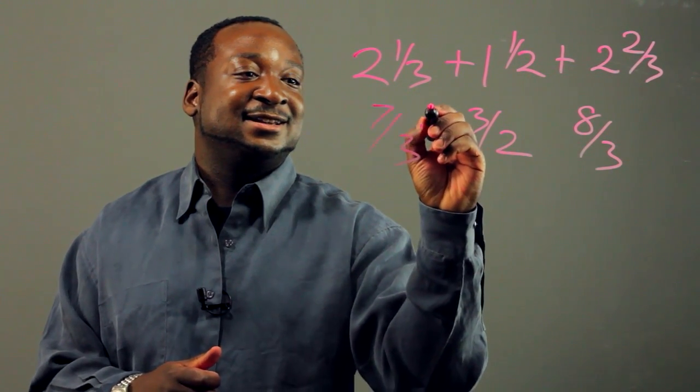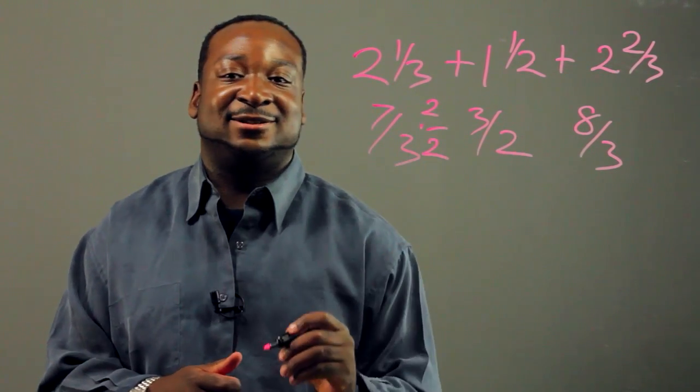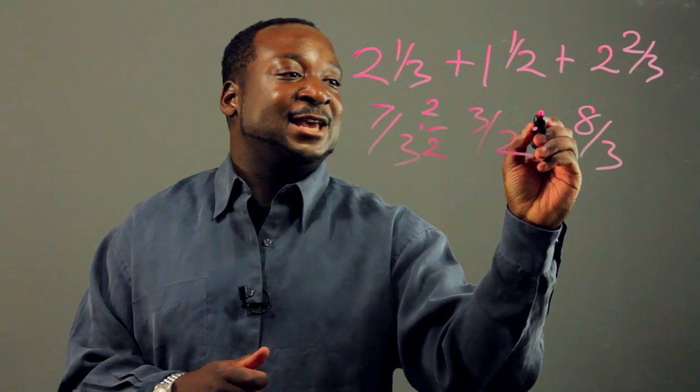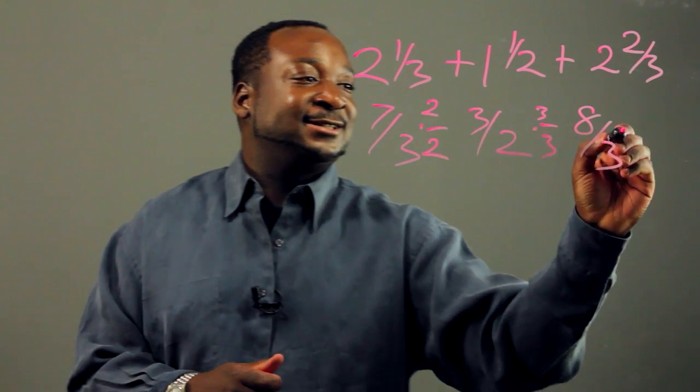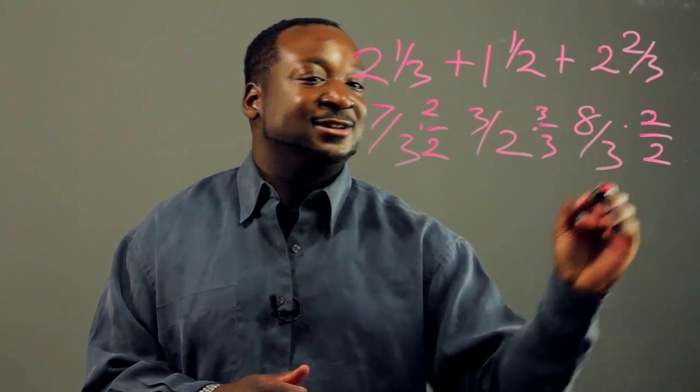To turn this into six, we're going to multiply times two over two, and to turn this into six, we're going to multiply by three over three, and to turn that into six, once again, we're going to multiply two over two.